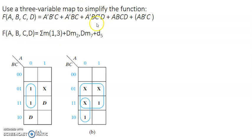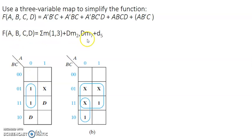Converting the problem: ā·b̄·c → minterm 1; ā·b·c → minterm 3; ā·b·c̄ → minterm 2 but with d entered; a·b·c → minterm 7 with d entered; and don't care a·b̄·c → minterm 5. Now write the entries into the map: 1 at locations 1 and 3, d at location 2, d at location 7, and don't care at location 5.